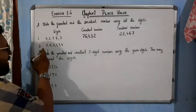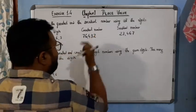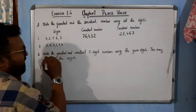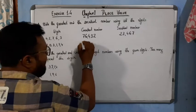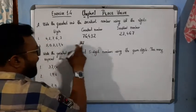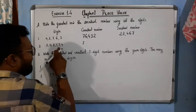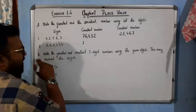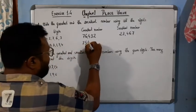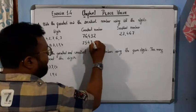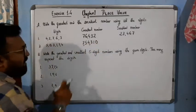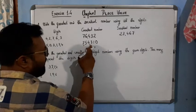Now let's take another example. For the greatest number, we first find the largest digit — 7 is the largest. For the smallest we have 0, which we will place at the end. After 7, the next greatest is 5, then 4, then 3, then 1, then 0. So the greatest number is 7,54,310.